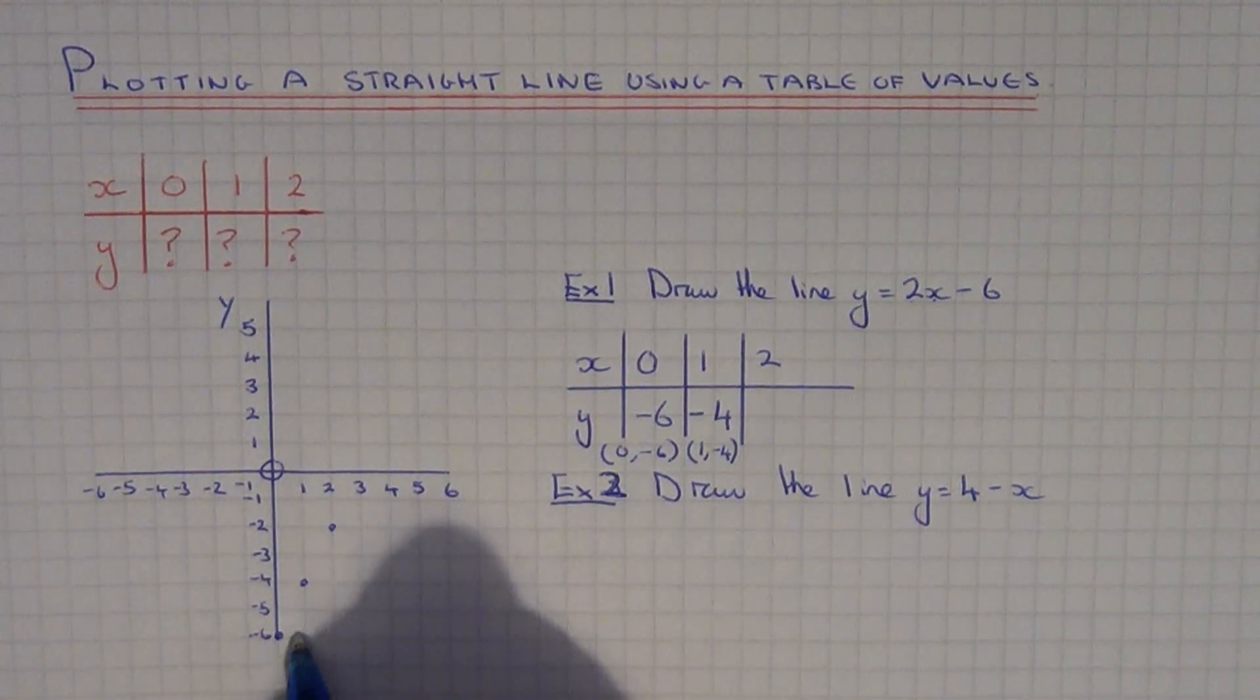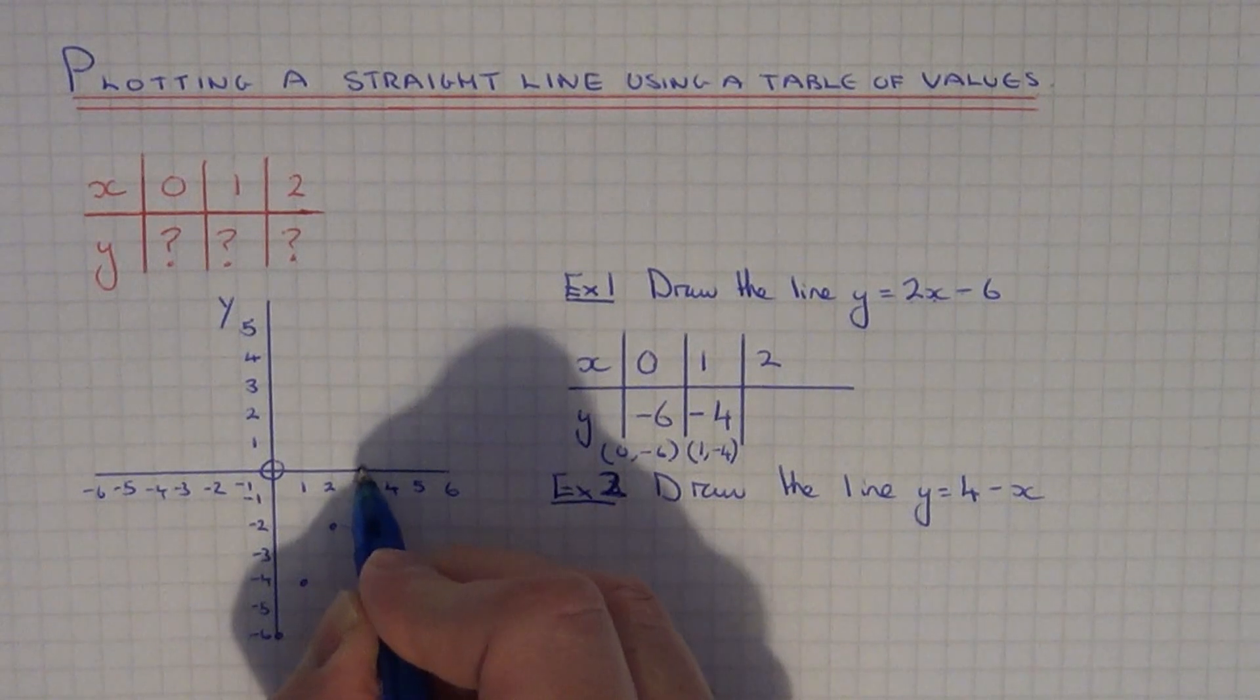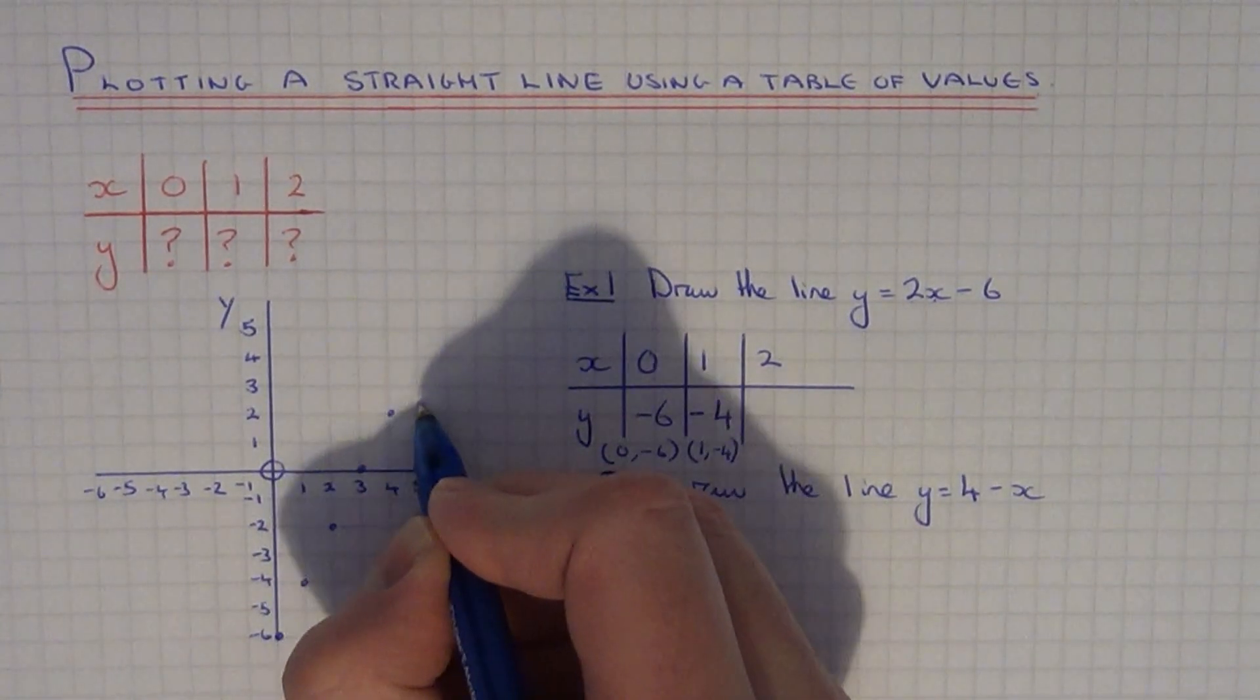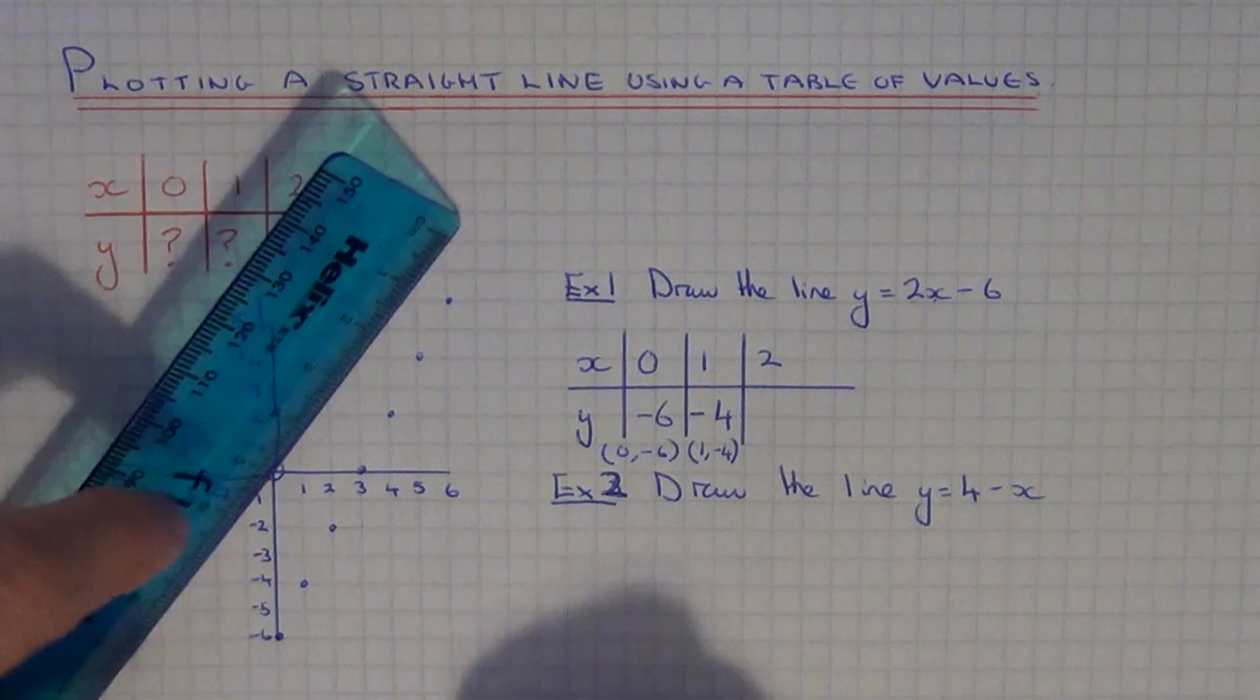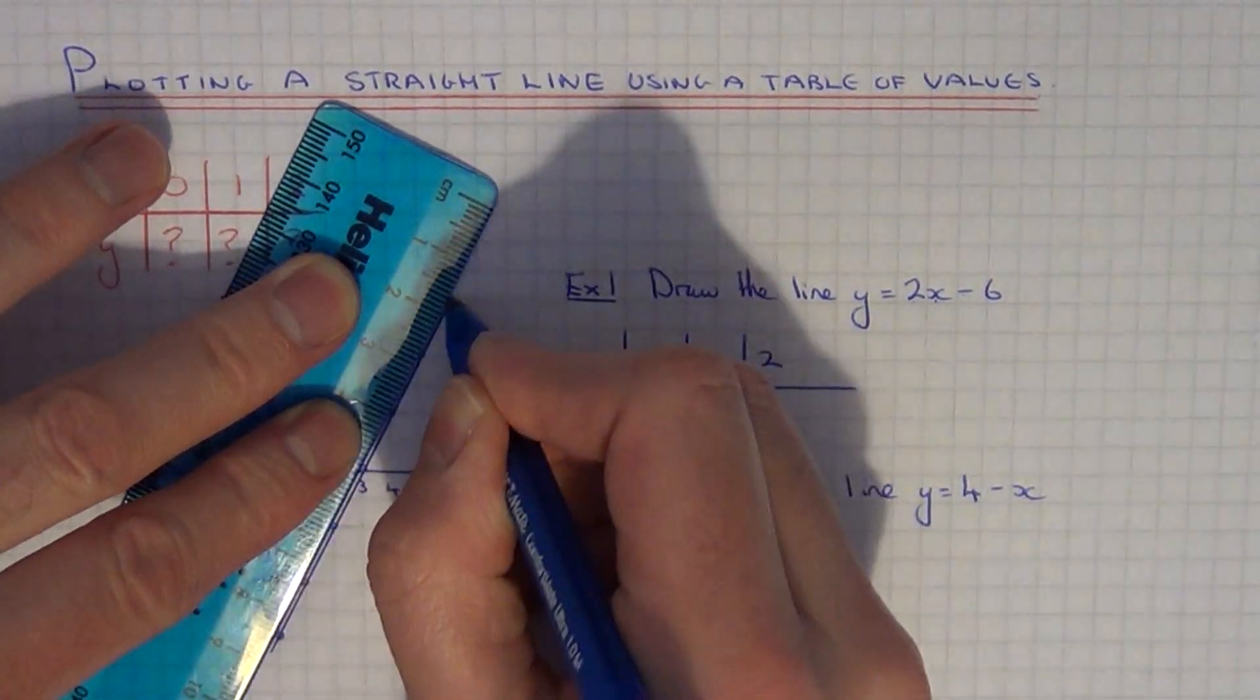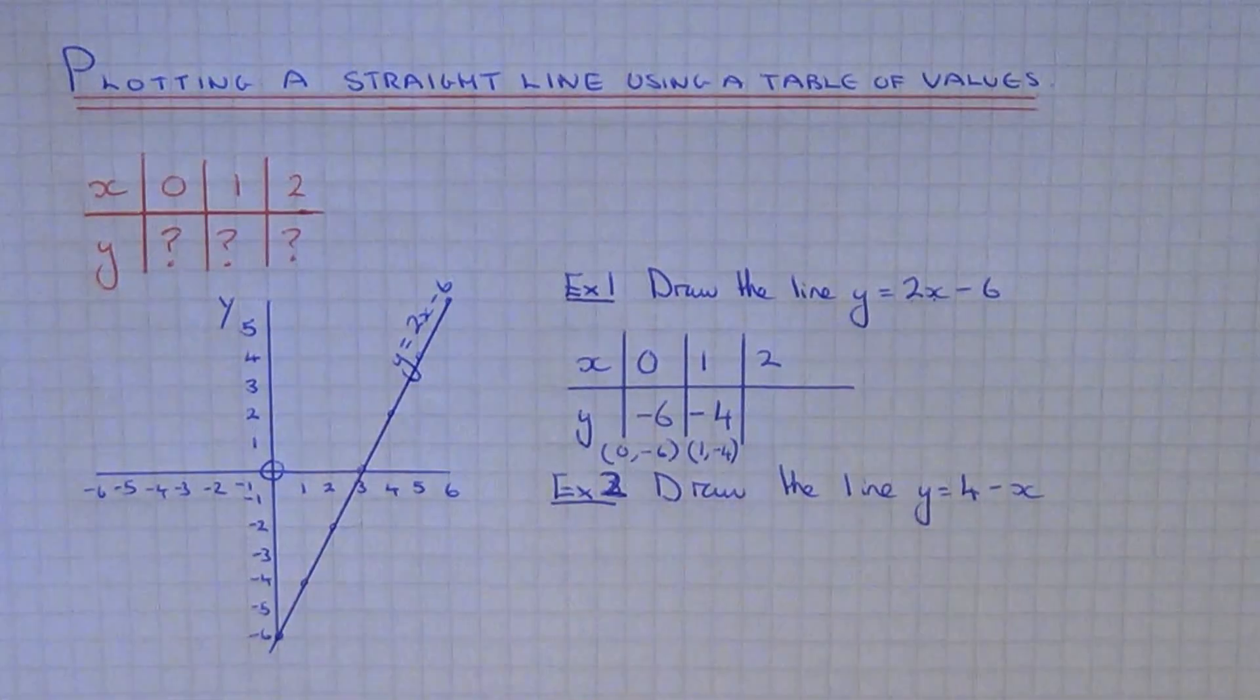Now you should be able to see that for every square to the right, we're going up 2 squares. So we can just mark on some extra points so our line is going through the whole of the coordinate grid. So if you draw a straight line going through these points, also label your line once you've finished. So that's our first one.